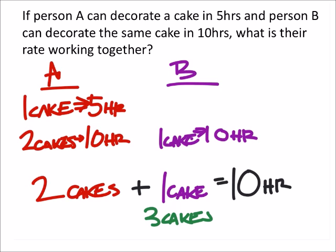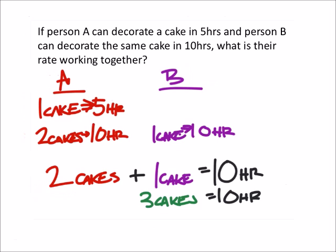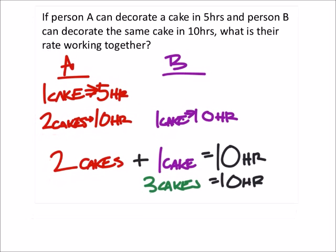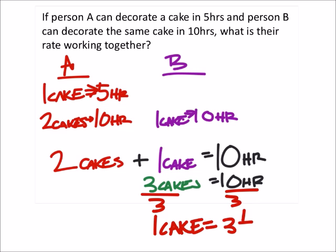In the 10 hours. Now that was working together. So if we wanted to know what their working rate together would be, we should just divide both sides by the three cakes, which would give us one cake. So they can do one cake in every three and a third hours.